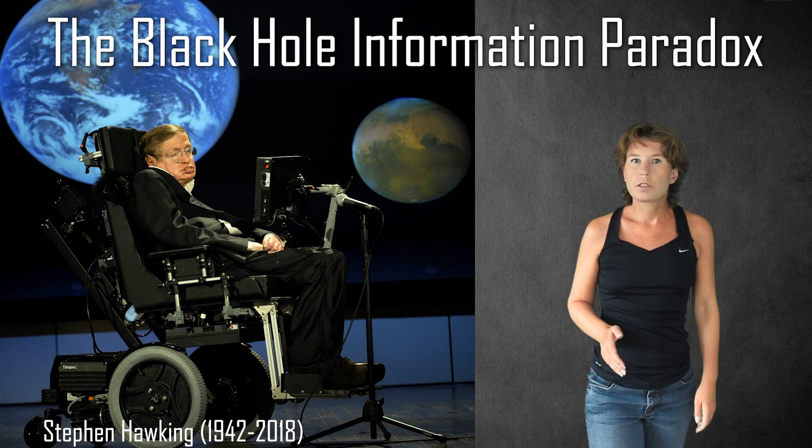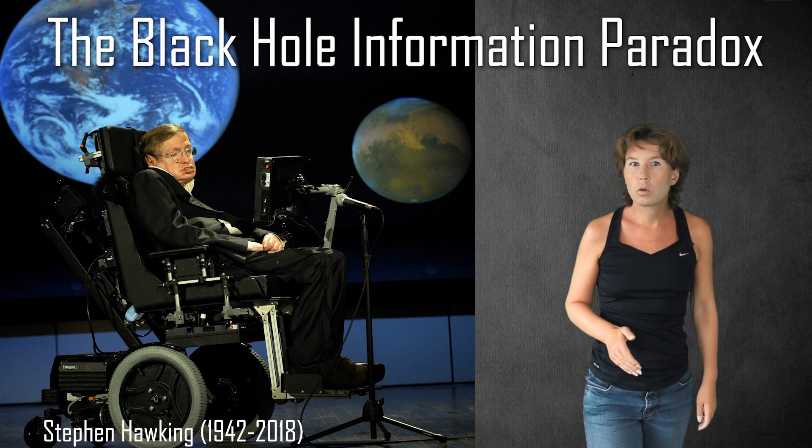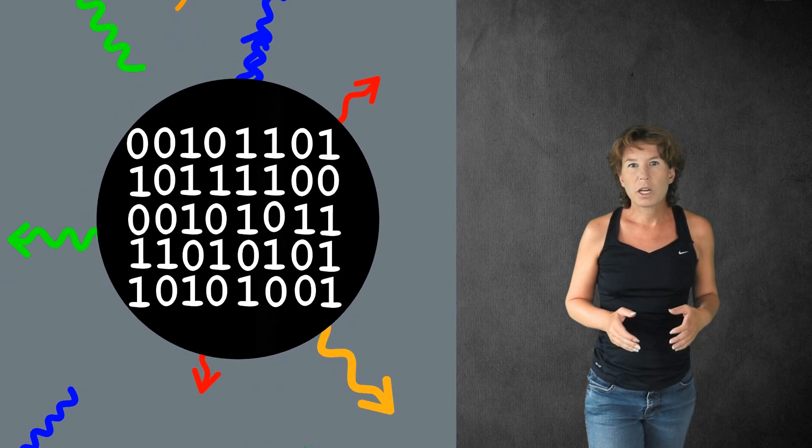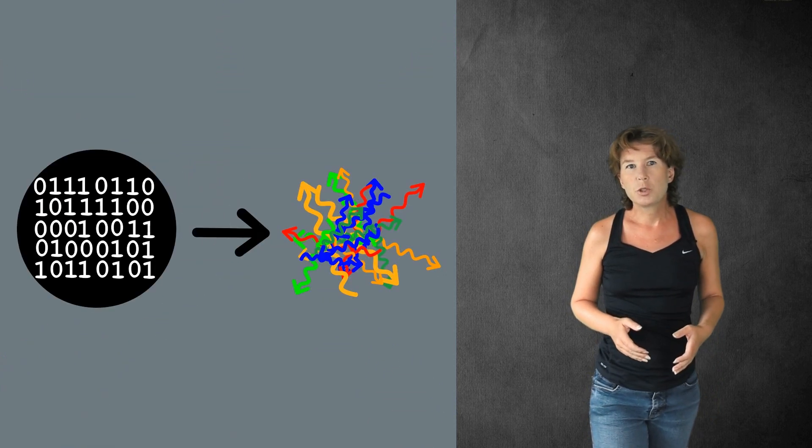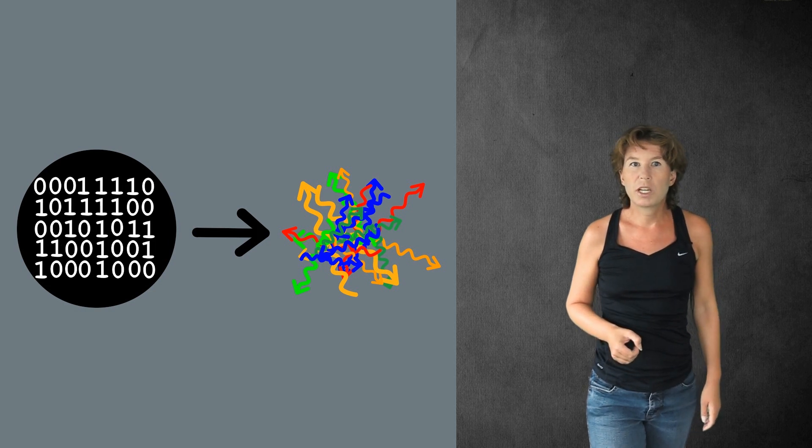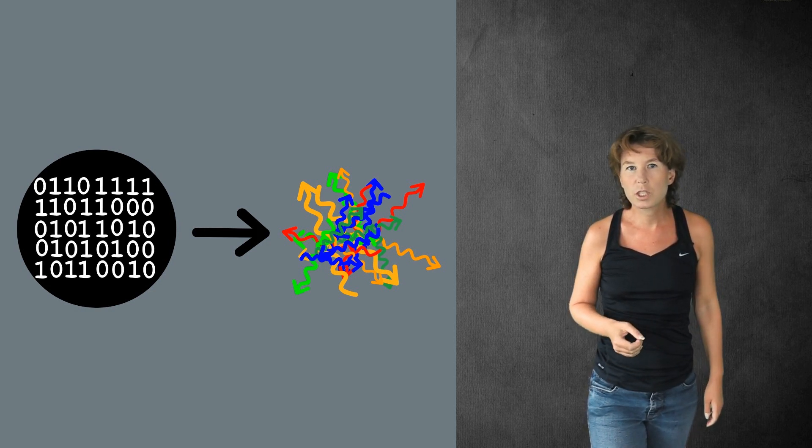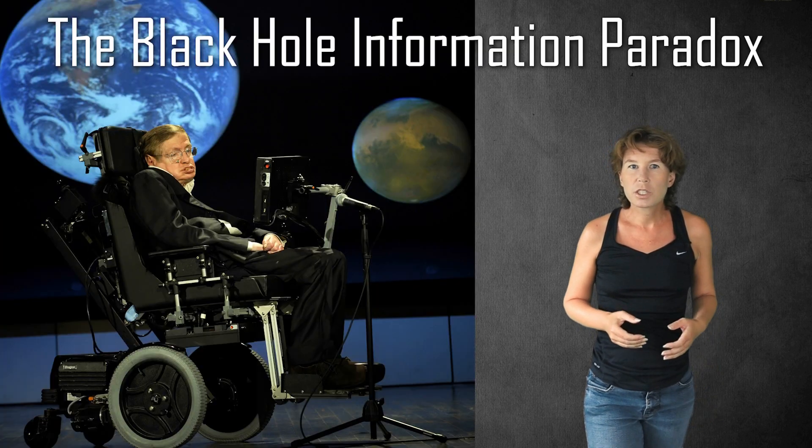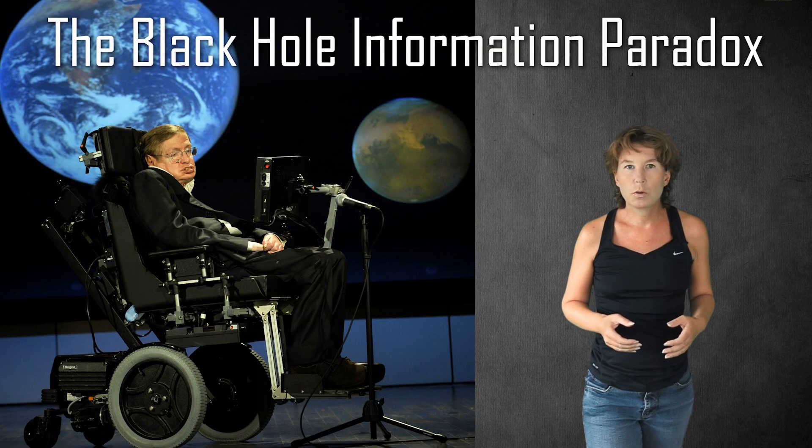In the early 1970s, Stephen Hawking discovered that black holes can emit radiation. This radiation allows black holes to lose mass and eventually to entirely evaporate. It is a process that seems to destroy all the information that is contained in the black hole and therefore contradicts what we know about the laws of nature. This contradiction is what we call the black hole information paradox.